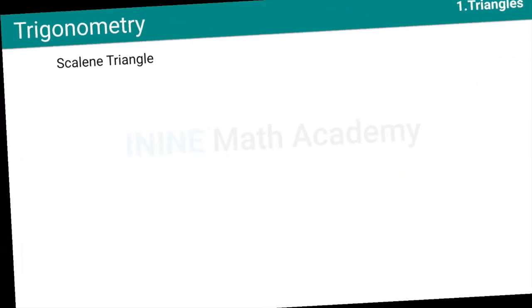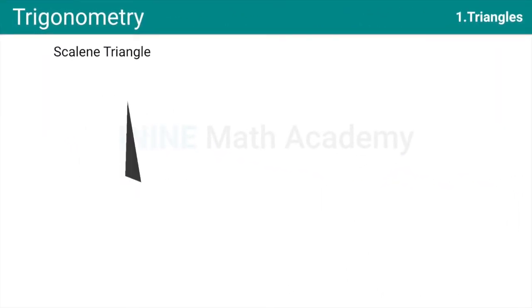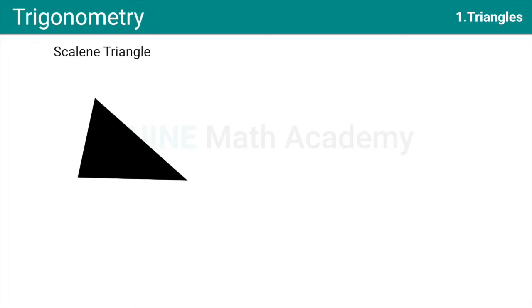In the next type of triangle, it is Scalene Triangle. Here, none of the sides are equal and none of the angles are equal and no angle is a Right Angle here.